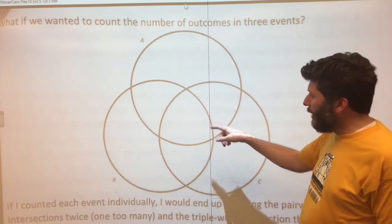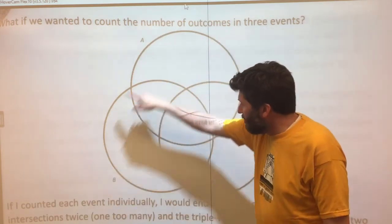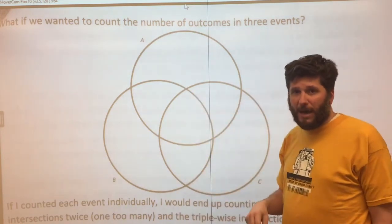So what I have is a three-way Venn diagram. I've got circle A here at the top, circle B here on the bottom left, and circle C here on the bottom right.